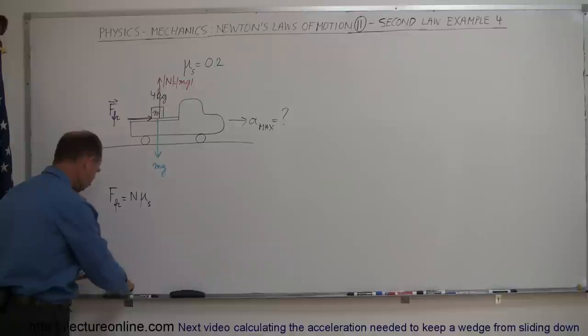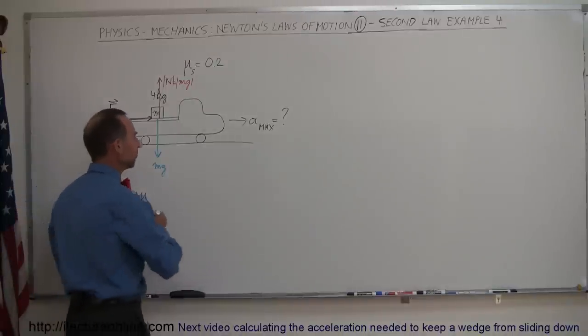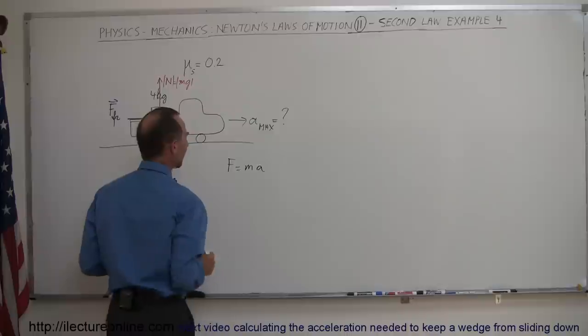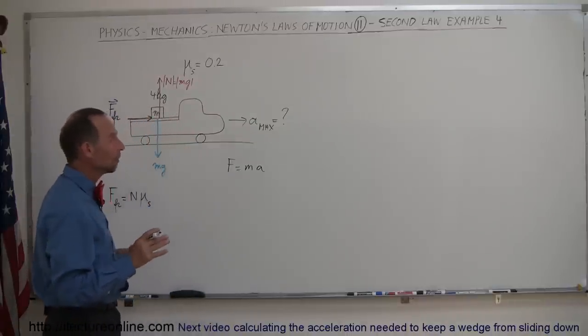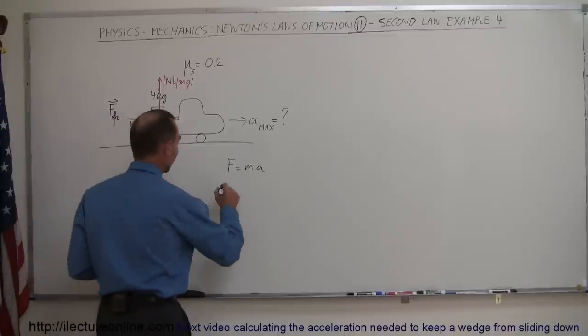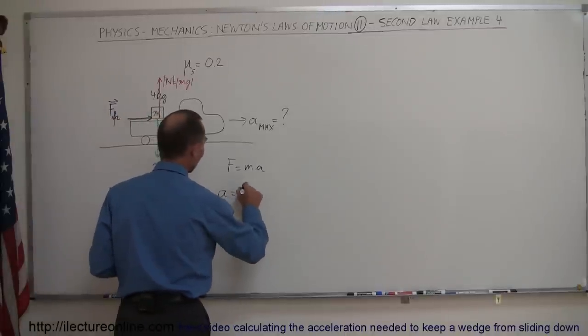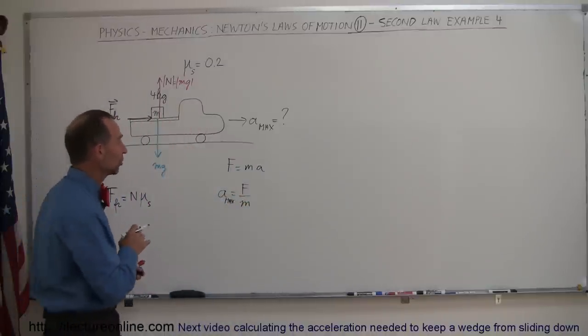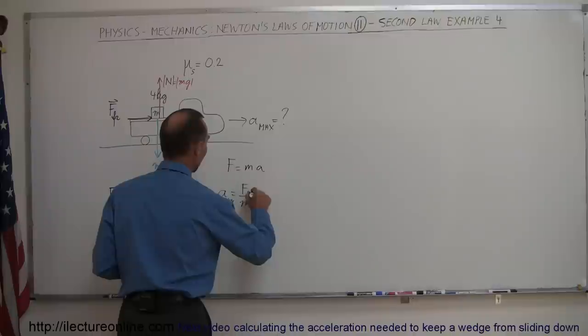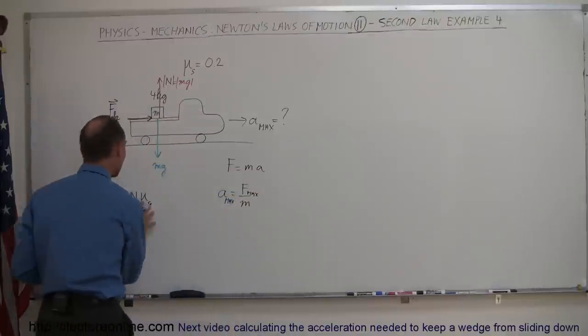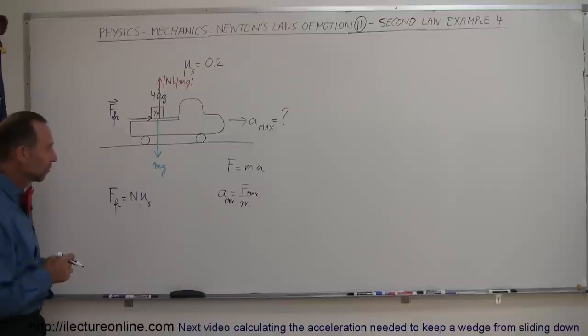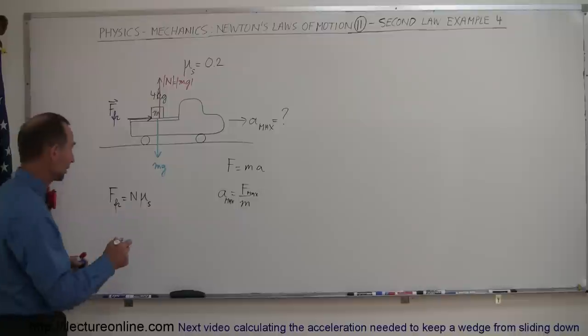So now we use Newton's second law, which says that F equals MA. So F equals MA, and we're looking for the maximum acceleration. So we're going to write this as A equals F divided by M, and we're looking for the maximum acceleration, which is the maximum force that the friction can give you. So we'll write this as F max, which is equal to this quantity right here, because this represents the total force that can be given in terms of friction force. So now we're ready to plug that in.